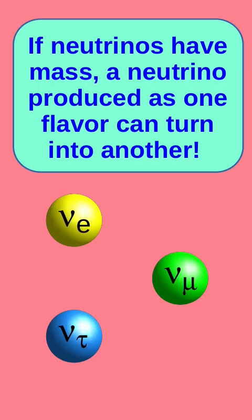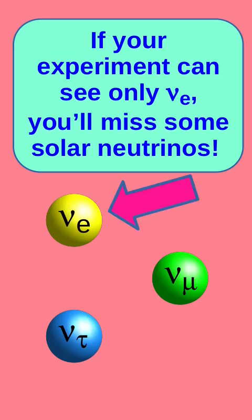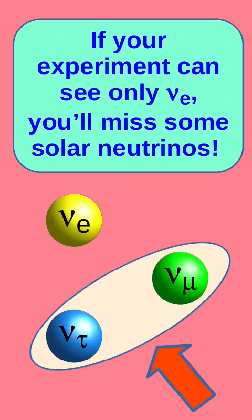But if neutrinos have mass, a neutrino produced as one flavor can turn into another flavor. So if your experiment can only see electron neutrinos, you'll miss some neutrinos.